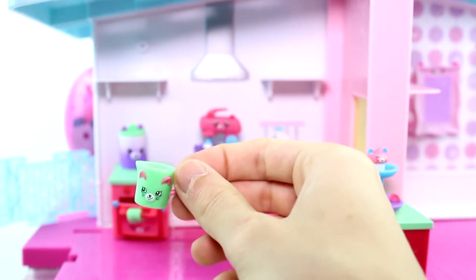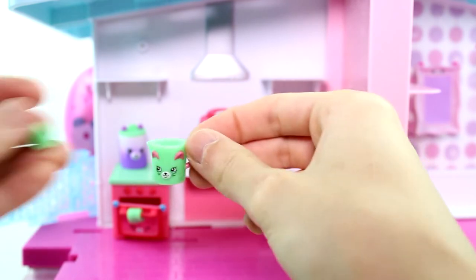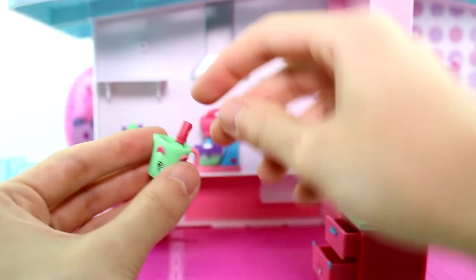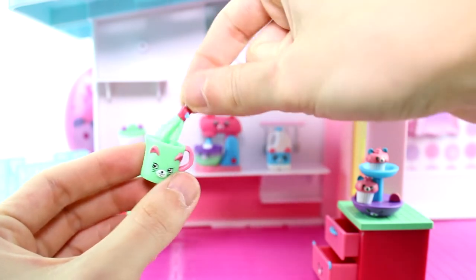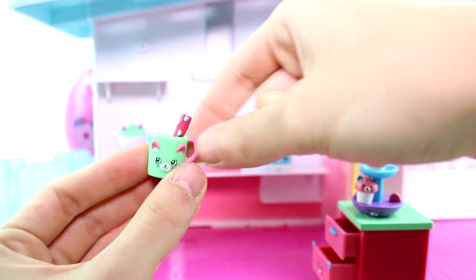What else do we have? We have a mixing cup, or a measuring cup, sorry, and then a whisk. So I love the little whisk. I think he's really cute. Whisk, whisk, whisk. So cute. I love the little face on him. So adorable. Let's go ahead and put that there.